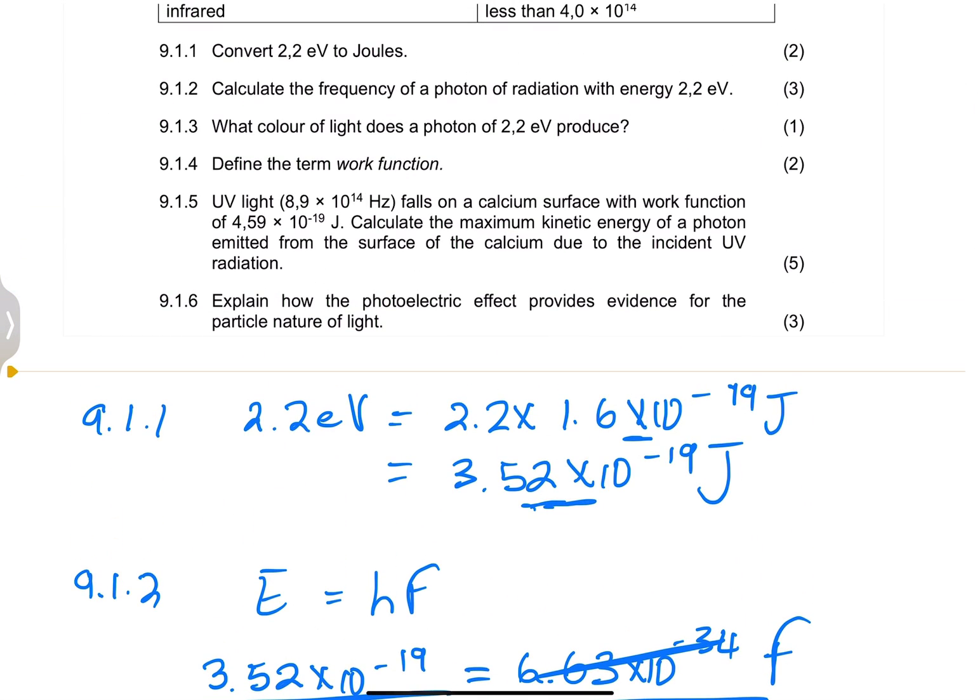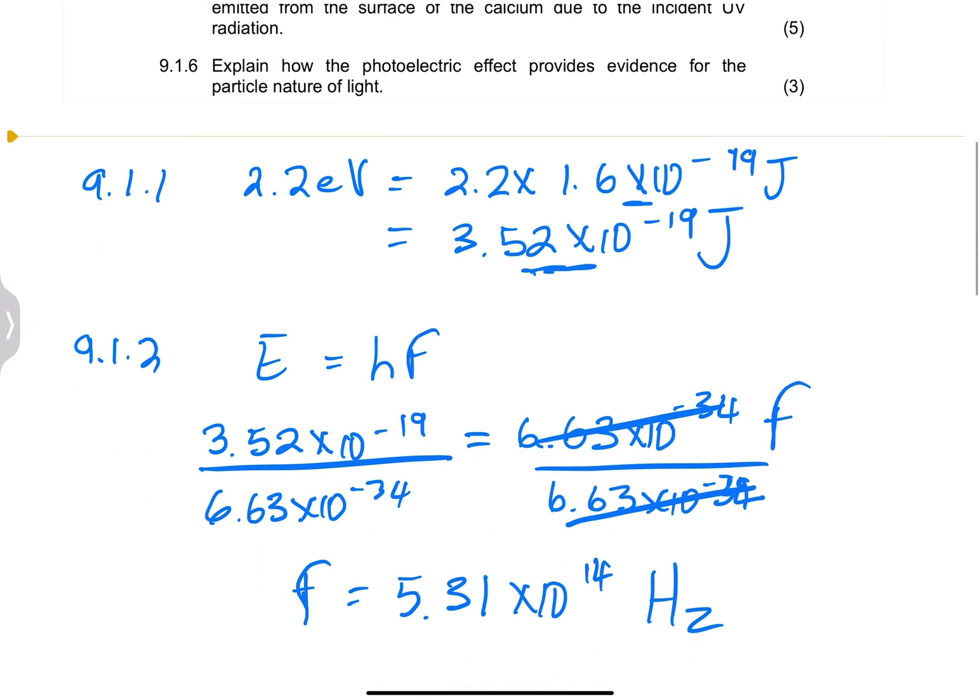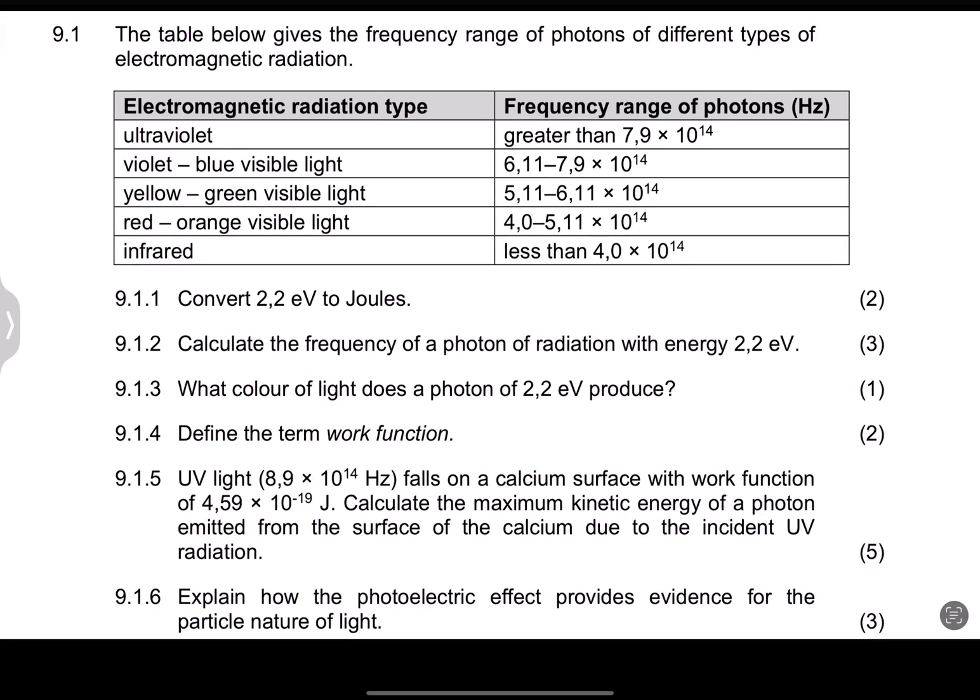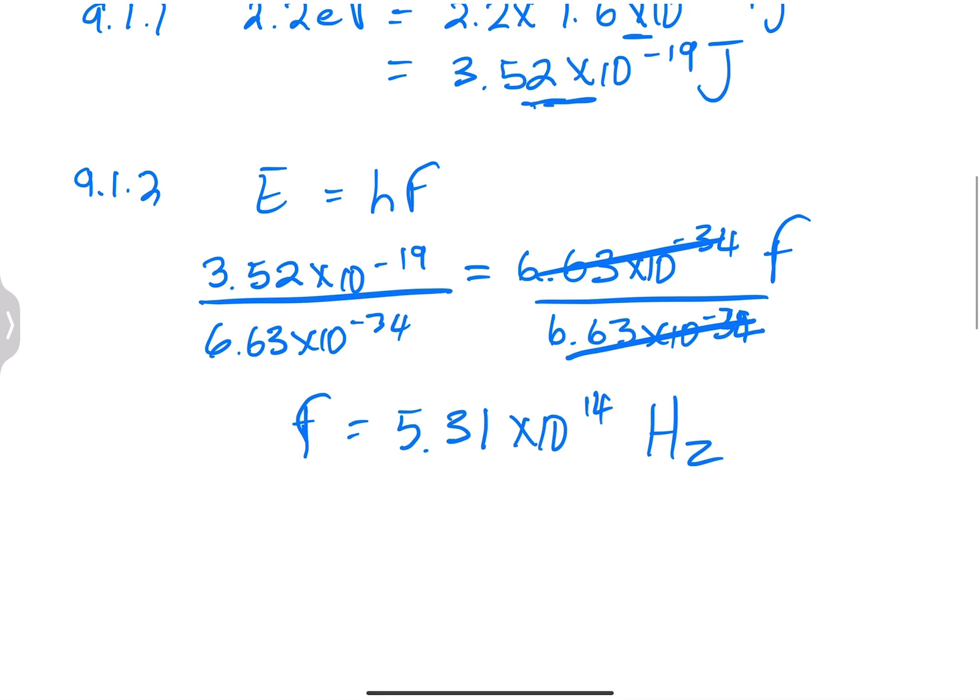Now, let's take the next question. They say, what color of light does a photon of 2.2 electron volts produce? We're going to get that from our table. If we look at that frequency, 5.31, that would fall within this range, 5.11 to 6.11. So that would be yellow to green light. To answer that question, that would be yellow to green.